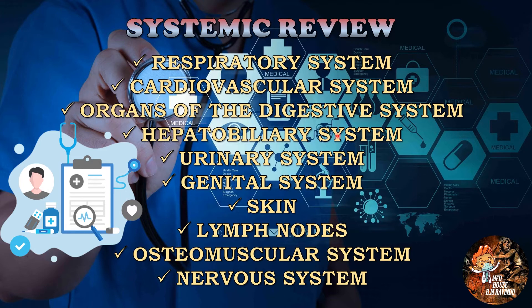We need to know whether the patient can distinguish all tastes and other symptoms like nausea, vomiting, diarrhea, and constipation. Under the urinary system and genital system, the doctor has to know the color of the urine, whether normal urination is present or not, and about disorders in the genital system. When we move to skin and lymph nodes, we have to know whether the patient has any rashes, itching of the skin, and enlargement of lymph nodes.